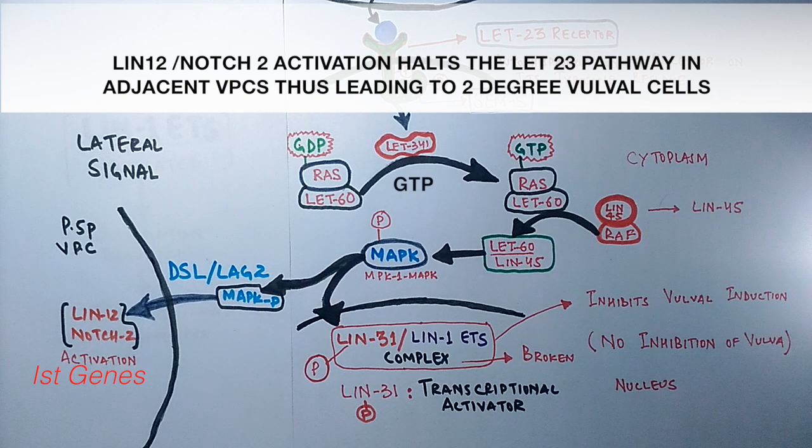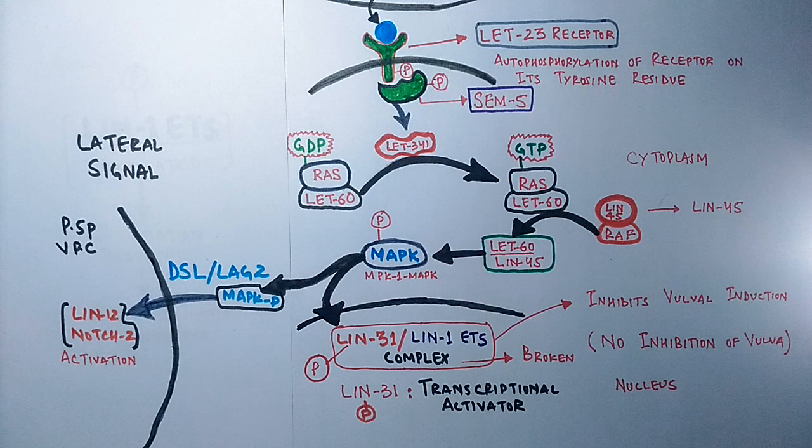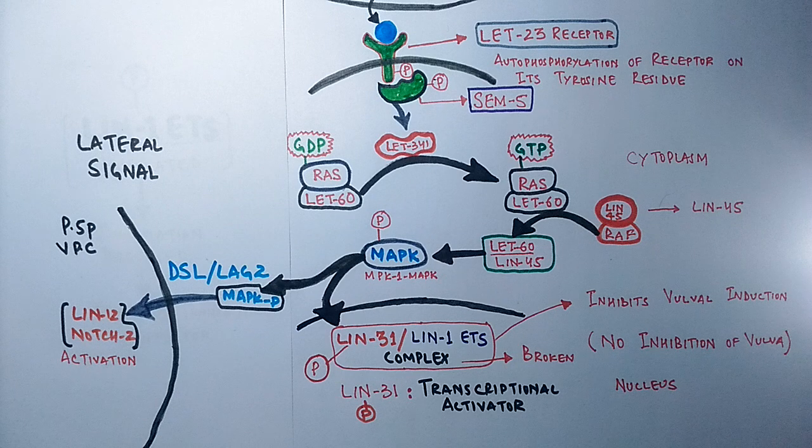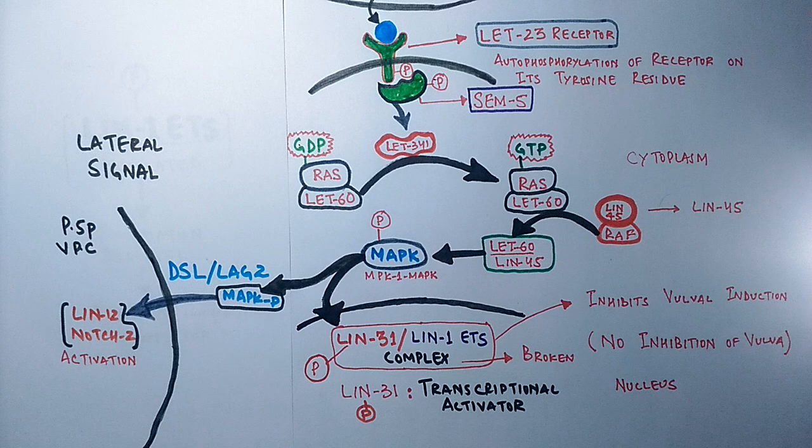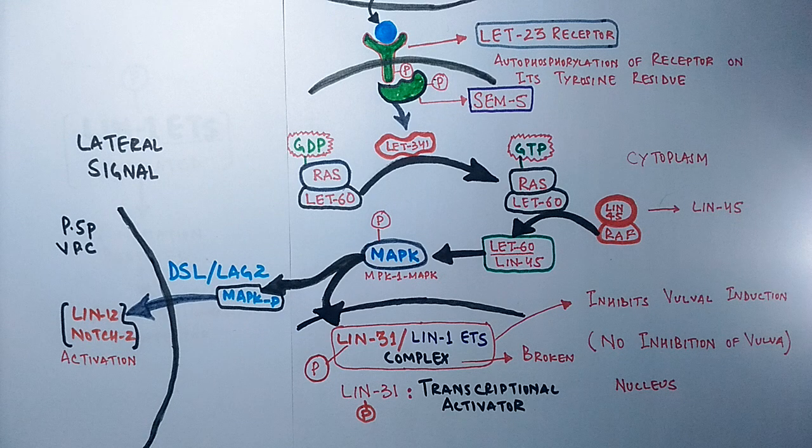Now let's recap in a nutshell. The inductive signal by lin-3 makes the 1 degree vulval cells, whereas the lateral signal by lin-12/notch chooses the 2 degree vulval cell fate.